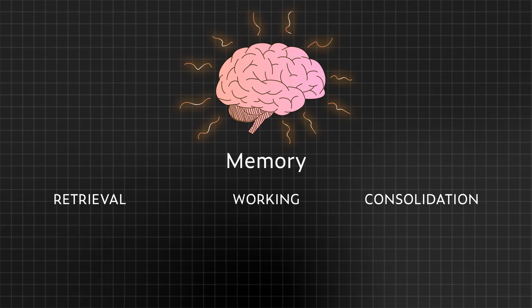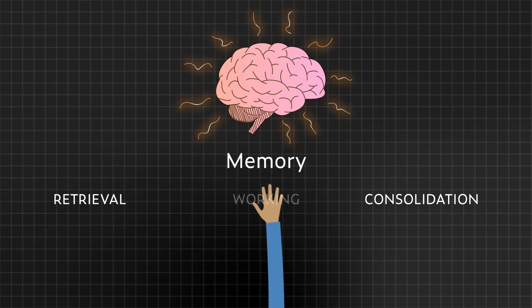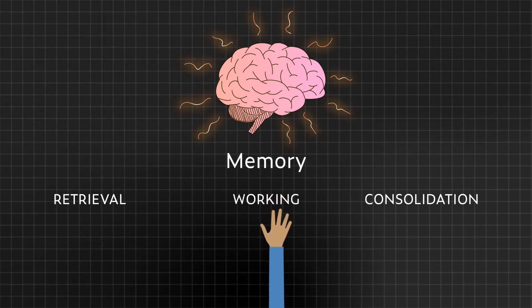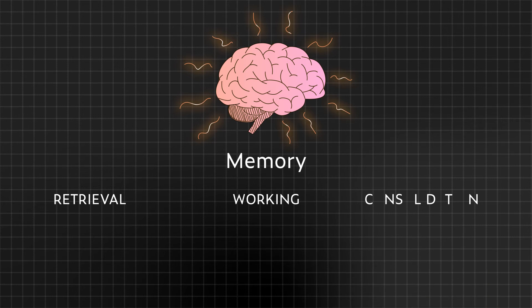Even when all the information is right in front of you, stress can impair your ability to use it. Working memory is the ability to store and manipulate information for brief periods of time — it's how you keep track of information from multiple sources while recalling previously-learned details in order to make decisions. Stress reduces your brain's ability to work through this process. And after an event is over, stress influences what you will take away from it, because your brain tends to retain information directly related to the source of stress.